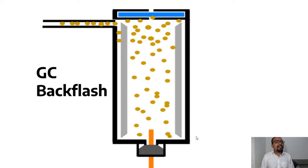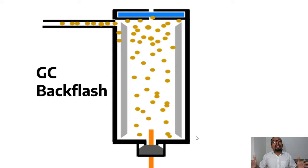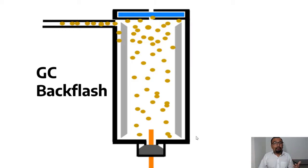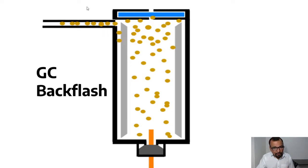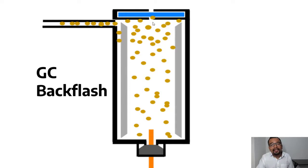When you make an injection into the injector port, your liquid sample undergoes vaporization. The vaporized form of the sample needs more space because the volume expands. If the available space is not enough to occupy the generated gas, the vaporized sample starts finding ways out — it can travel into the carrier gas inlet line or accumulate just below the injector septum. This is called the back flash.